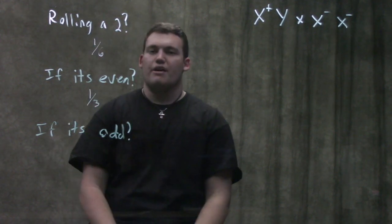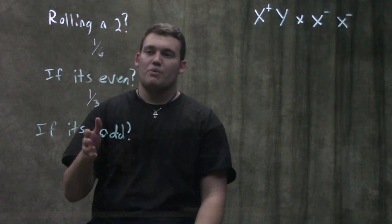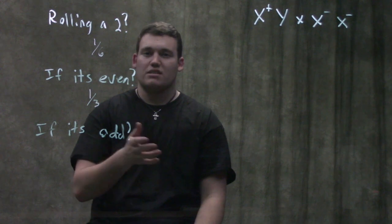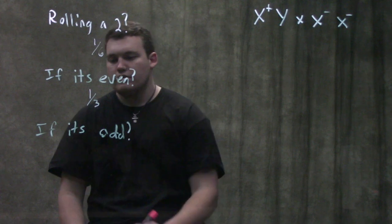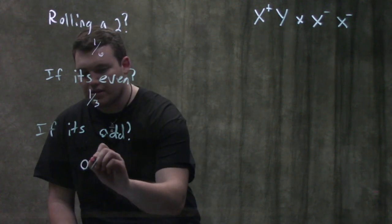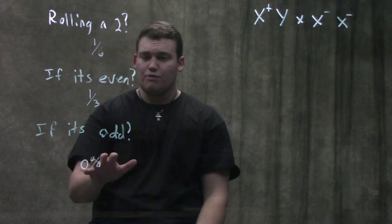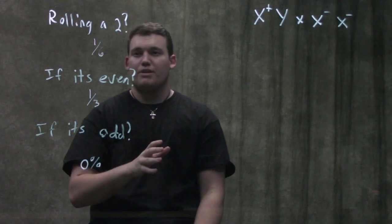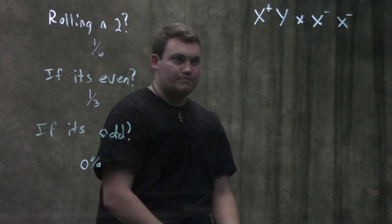What if I said it's odd? That would mess with the probability even more. We went from a one-sixth chance, and now I'm telling you it's an odd number — what's the chance that it's a two? Well, it's impossible, so it's going to be a zero percent chance. Hopefully that makes sense; we're going to apply the same principles to a genetics problem.